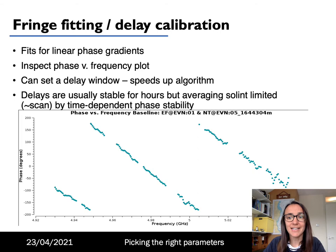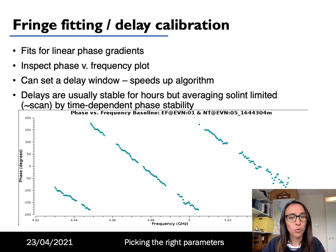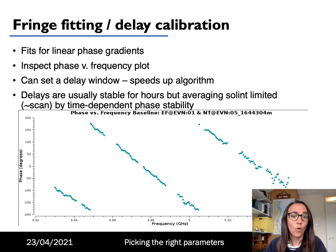You should have learned about fringe fitting in a previous lecture — this estimates the delays and rates by fitting for linear phase gradients. When you're doing fringe fitting, one of the first things you should do is look at a phase versus frequency plot. You can see an example on this slide: you can see the linear gradient of phase against frequency, and you can see that this wraps around several times. When doing fringe fitting you can pick a delay window, so the algorithm only searches within a certain range of slopes. This can greatly speed up the algorithm, but it's important that you inspect the phases to make sure you're picking a sensible range. Delays are usually stable for hours so you can generally average over the whole scan, but you should still inspect these because sometimes this isn't true — for example if atmospheric conditions change dramatically.